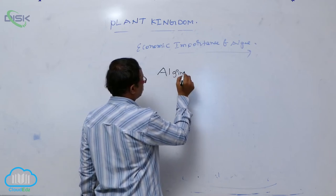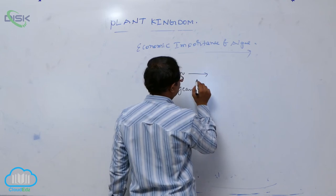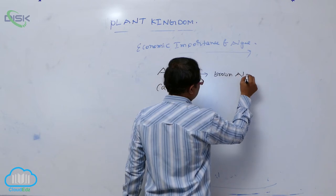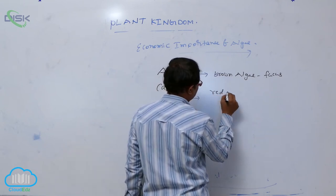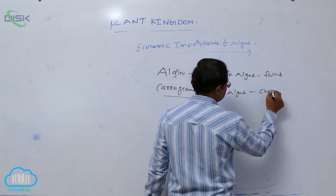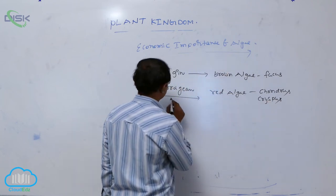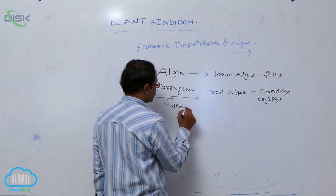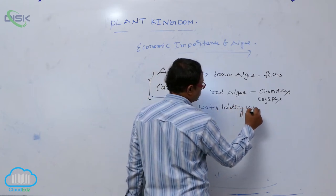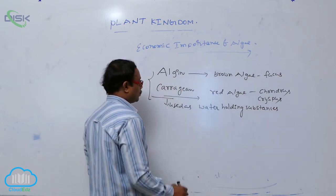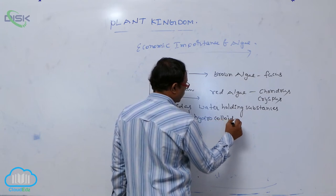Algin and carrageenan. Algin is obtained from brown algae, Fucus. Carrageenan is obtained from red algae, Chondrus crispus. Both algin and carrageenan are used as water-holding substances commercially. They are known as hydrocolloidal substances.